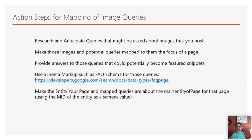If you take those images and potential queries and make them the focus of your page, providing answers to the queries, you may become the source of information about them. If you use schema markup for the queries and make the main entity of your page the thing you've taken a picture of, you can use the machine ID with the same-as value to identify the entity the picture is about, and that can be helpful.